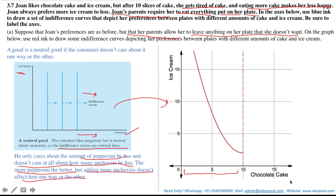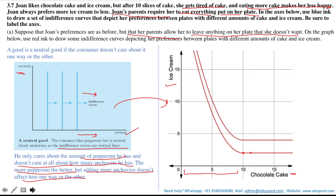In Joan's scenario, she is neutral about chocolate cake beyond 10 slices since her parents allow her to leave it. She simply leaves the extra cake and only cares about ice cream. So after 10 slices, her indifference curves become horizontal straight lines — she is indifferent to the amount of chocolate cake on her plate. The preference direction is upward, toward more ice cream. Note that in the anchovies example the neutral good was on the y-axis giving vertical lines, but here the neutral good is on the x-axis, giving horizontal lines.